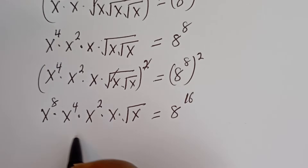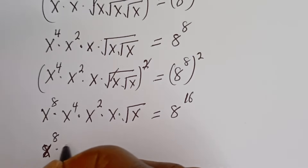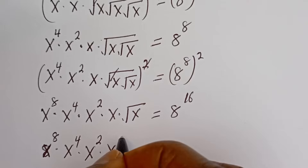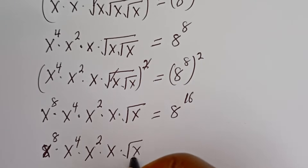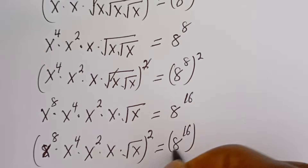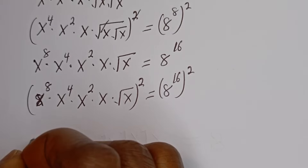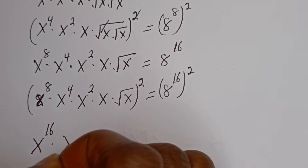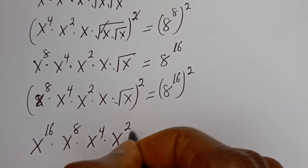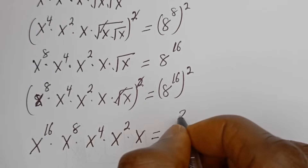Let's square both sides of this equation again. We have S to the power of 8, multiplied by S to the power of 4, multiplied by S squared, multiplied by S, multiplied by square root of S — all squared — is equal to H to the power of 16 squared. Then this gives S to the power of 16, multiplied by S to the power of 8, multiplied by S to the power of 4, multiplied by S squared, and we cancel this, multiplied by S is equal to H to the power of 32.